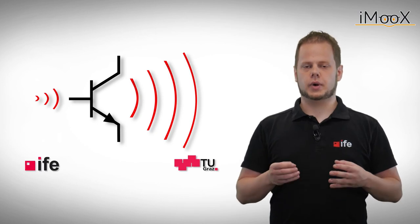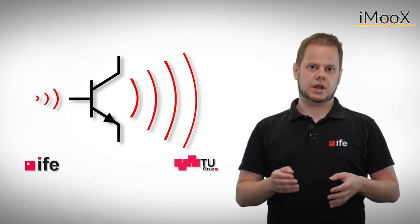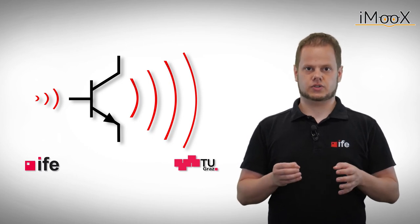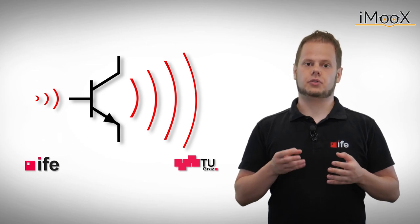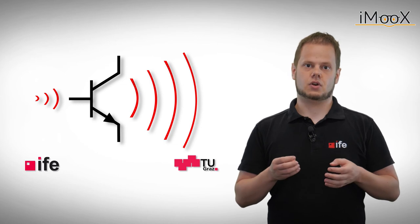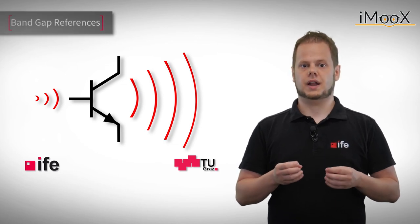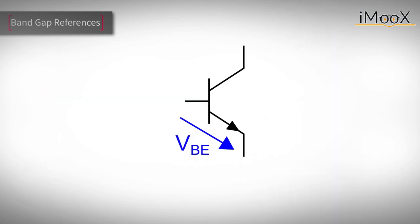Now we know how we can generate and duplicate a constant current. But many applications require a constant voltage, like analog to digital converters. A very popular circuit to generate a constant voltage is the VBE reference or more commonly called the band gap reference. The basic idea is to use the base emitter voltage of a bipolar transistor as a constant reference voltage.